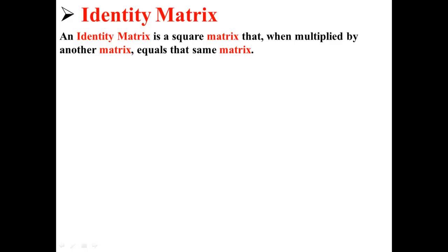An identity matrix is a square matrix that, when multiplied by another matrix, equals that same matrix. For example, here we have a basic identity: 5 times 1 equals 5. 5 is the identity of 5.